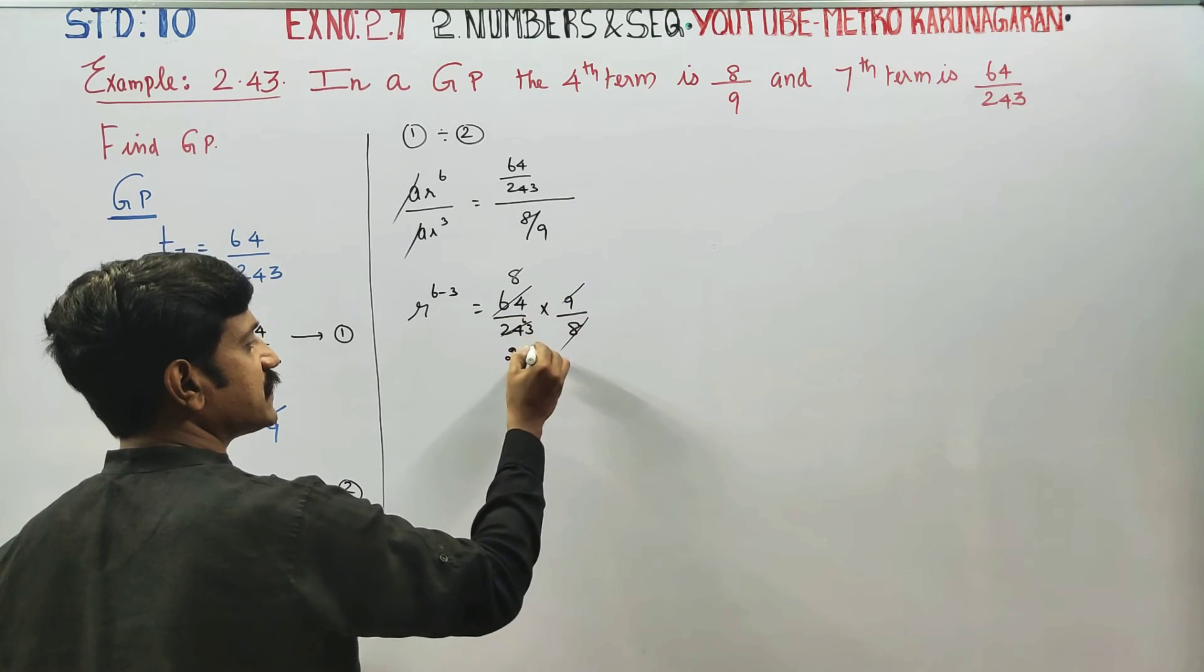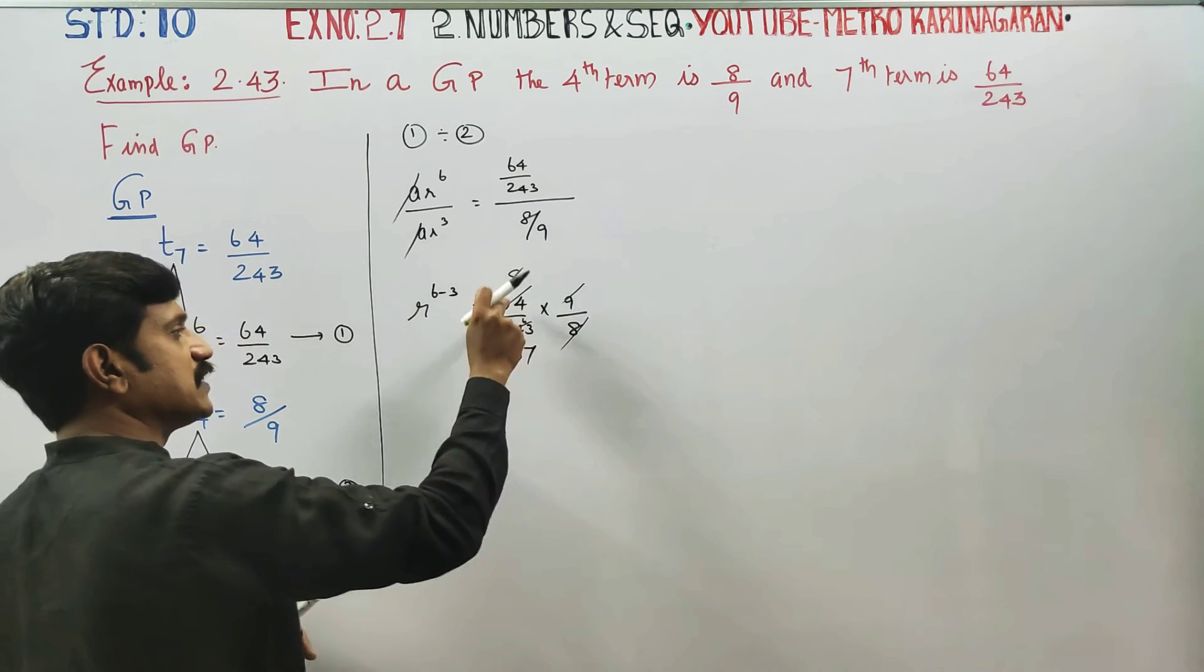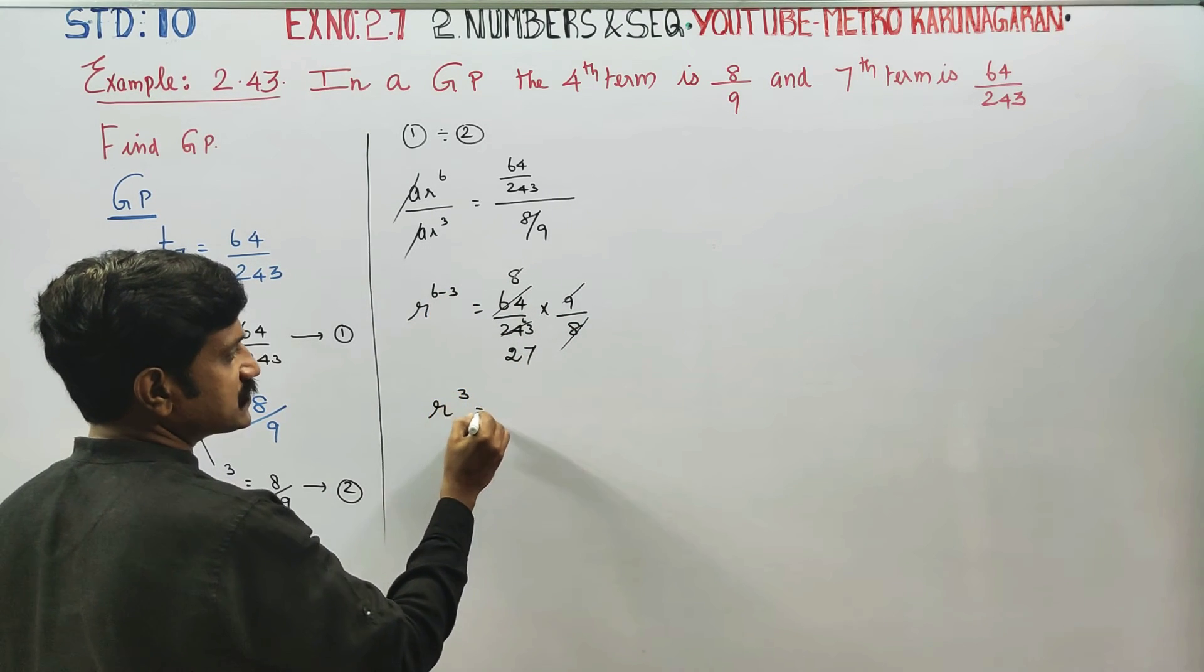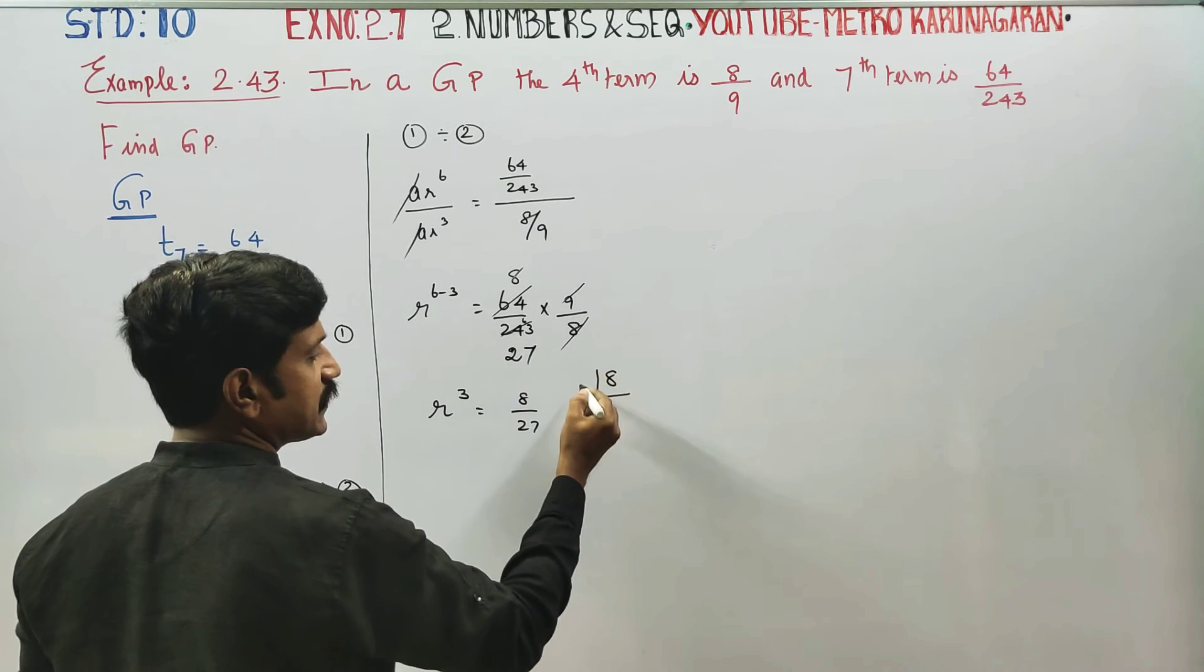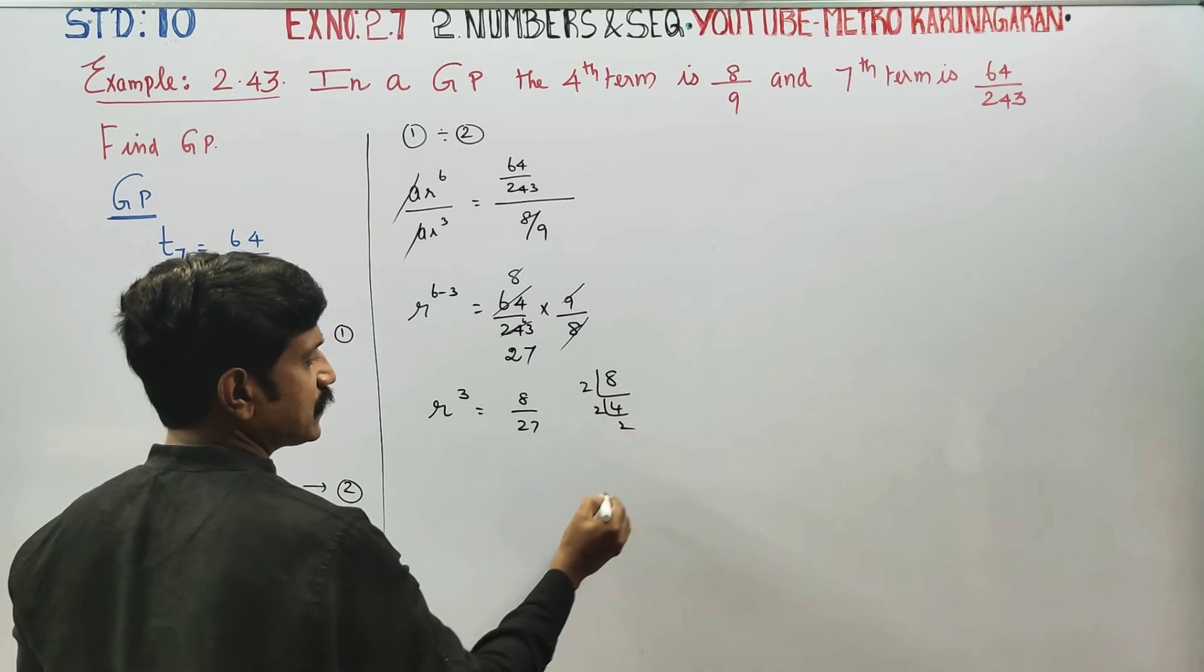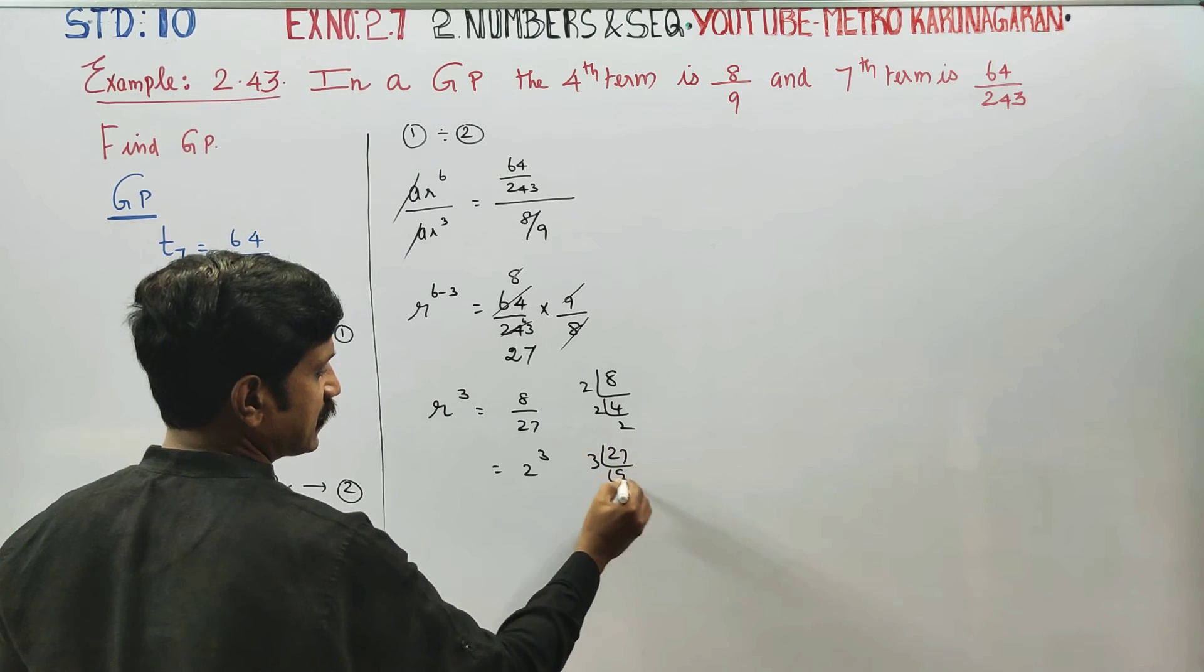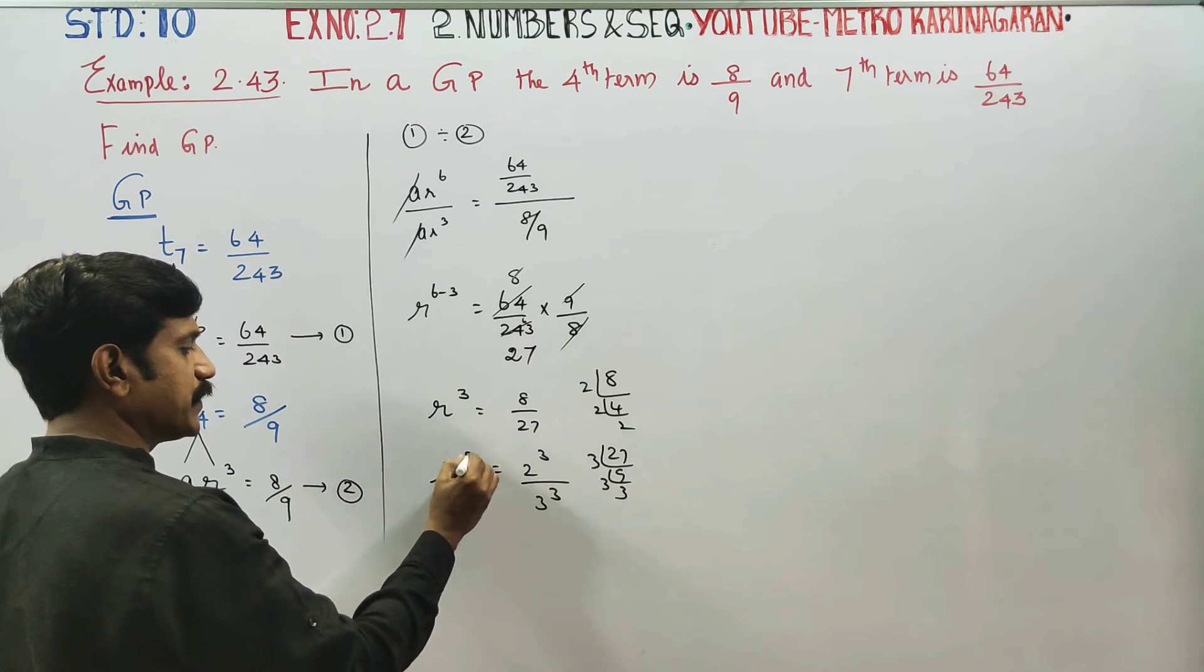63 is 7 times. 8 tables are 8, 9 tables are 28. 63 is equal to 8 by 27. 8 you can see 2 times 4, 2 times 2, this is 2 cube. 27 tables are 9, that is 3, that is 3, this is 3 power 3. This is R power 3.